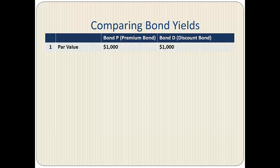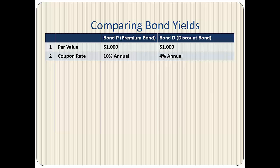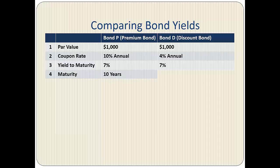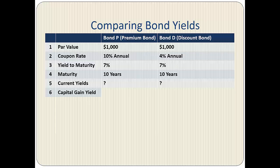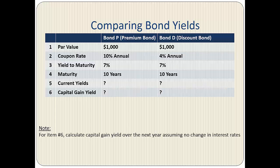The par value for both bonds is $1,000. Bond P has a coupon rate of 10% paid annually, whereas Bond D has a coupon rate of 4%, also paid annually. Both bonds have a yield to maturity of 7%, and both mature in 10 years, so the coupon rate is the only difference. We need to calculate the current yields and capital gain yields for both bonds, assuming the yield to maturity remains unchanged.